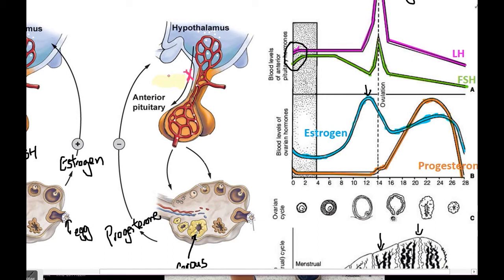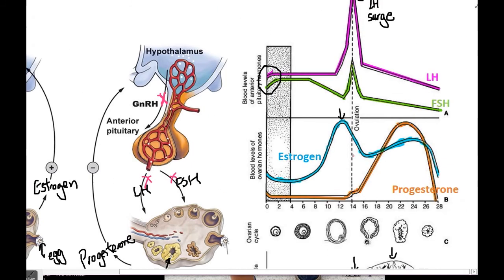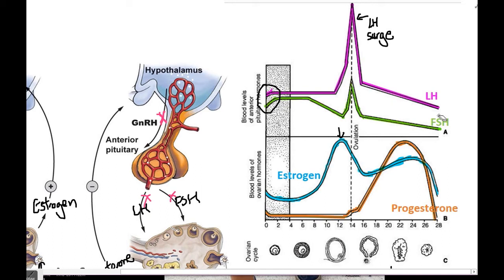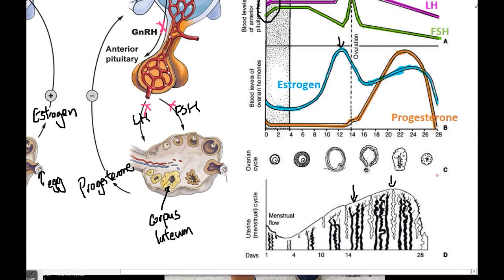The second thing progesterone does is travel back to the hypothalamus and block the release of GnRH. Because there is no GnRH, LH and FSH are also going to be blocked. This is a good thing, because there is already an egg in the fallopian tube — it doesn't make sense to cause another follicle to develop or trigger another ovulation. So progesterone inhibits GnRH secretion, which in turn causes FSH and LH to decline — and that's exactly what the graph shows after progesterone peaks.